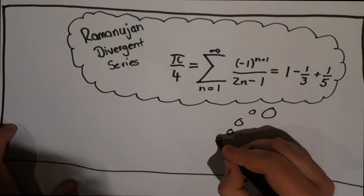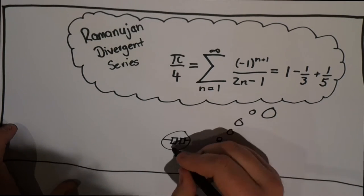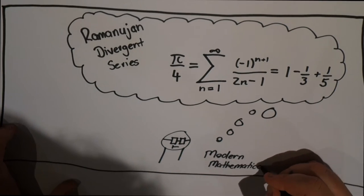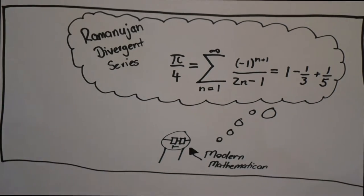Ramanujan was elected to a Trinity College Fellowship in October of 1918, a prize that would last for six years, cut tragically short by his death in April of 1920.